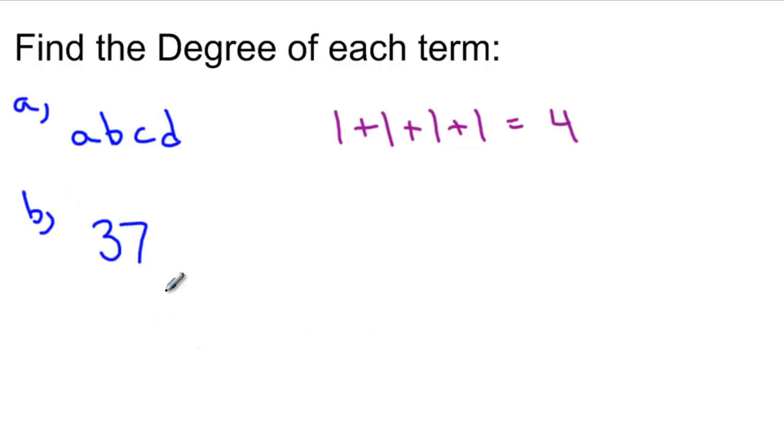Question B, I have the term 37. Notice how there is no variable. So when there's no variable, when we just have a coefficient, we don't say that it has no degree. Instead we say that the degree is 0.